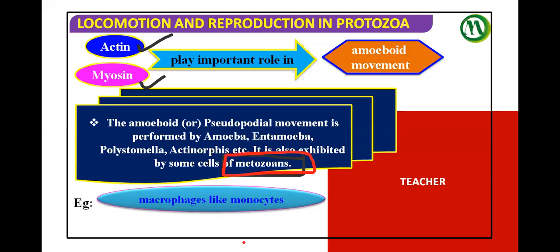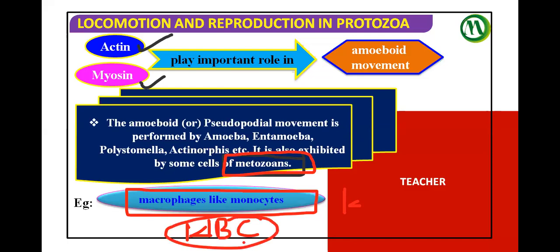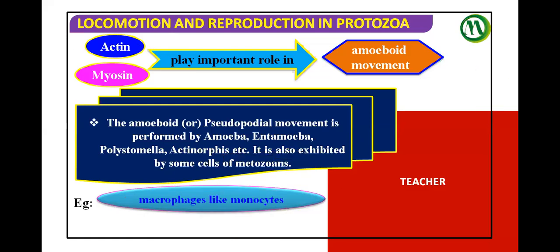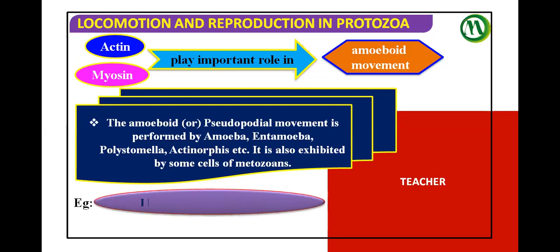This locomotion is also exhibited by some cells of metazoans — that's why we are learning about it. Even in humans, WBC white blood cells include monocytes, which when activated become macrophages. In macrophages also, pseudopodial-like structures are formed.